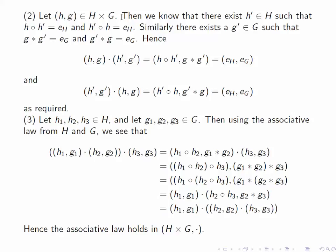So we have our three elements (h₁,g₁), (h₂,g₂), and (h₃,g₃) in the Cartesian product. Let's first take the product where we multiply the first two elements together first and then multiply the result by (h₃,g₃). So (h₁,g₁) dot (h₂,g₂) equals (h₁ circle h₂, g₁ star g₂). When we multiply this by (h₃,g₃), we get h₁ circle h₂ circle h₃ and g₁ star g₂ star g₃.